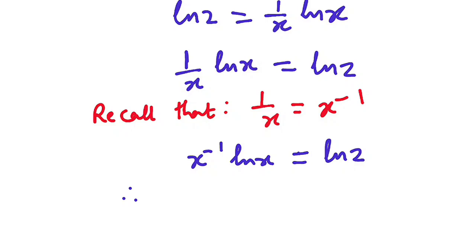I want you to recall again that when you have something like a, it is the same as e to the power of ln a. This is telling us that e and ln are inverse to each other, so when they cancel we are going to have a. Take note of that.